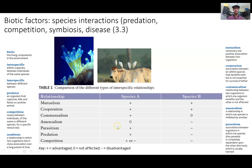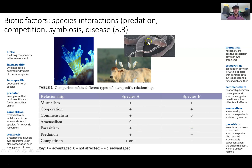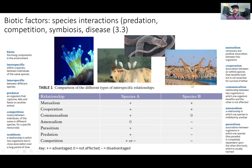Parasitism and predation are similar — one species benefits and the other is negatively impacted. Parasitism requires a host, and it is at the host's expense that the parasite thrives; this is an image of a tapeworm that can live within the intestines of organisms. With predation, if an organism is being eaten, it is obviously negatively affected. Competition is interesting — multiple species competing over the same resource — where both can be negatively impacted, or one may benefit at the expense of another.